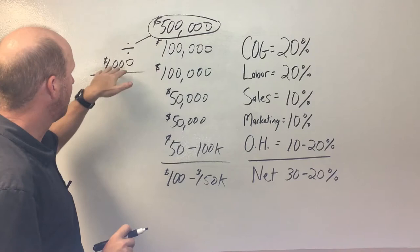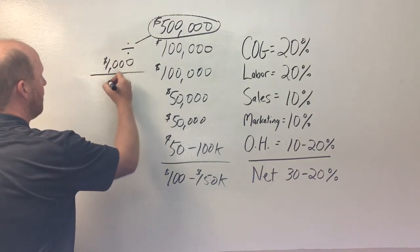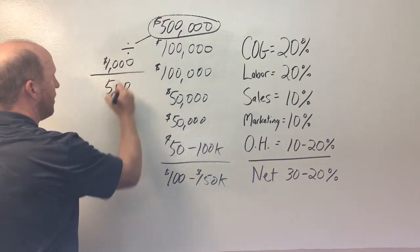Well, we take the half a million divided by the 1,000, that equals 500 leads. Does that make sense?